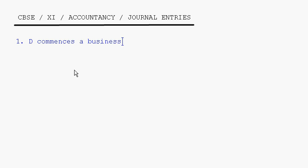Today let's take up some journal entries. Let's try to understand how to make journal entries. Let's take certain transactions and we'll write down the journal entries for them. The first transaction: D commences a business with the capital of rupees 5 lakhs.